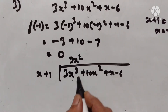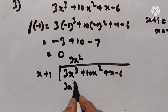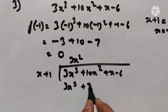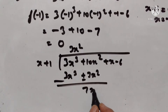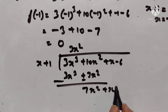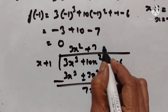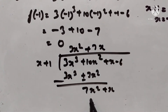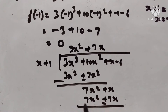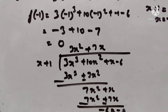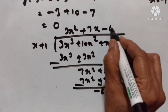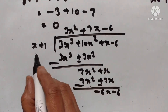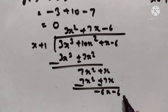So, 3x² into (x + 1). This gives 7x² + x, plus 7x. This is -6x - 6. -6 into (x + 1) = -6x - 6.